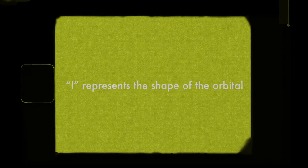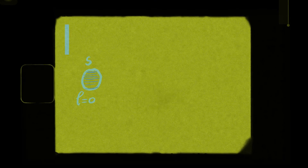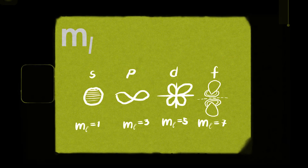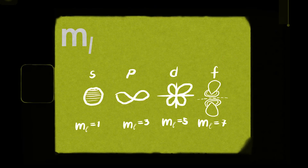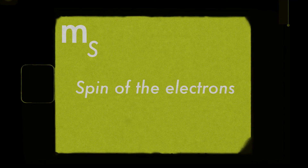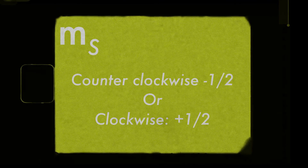Basically, it uses quantum numbers. The first three of them determine what the orbital looks like. First, we have N, which represents the size of the orbital and its electrons. Then we have L, which represents the shape of the orbital — it's either S, P, D, or F. M sub L for the orientation of the orbital, and lastly M sub S for the spin of the electrons, which can only be either counterclockwise or clockwise.